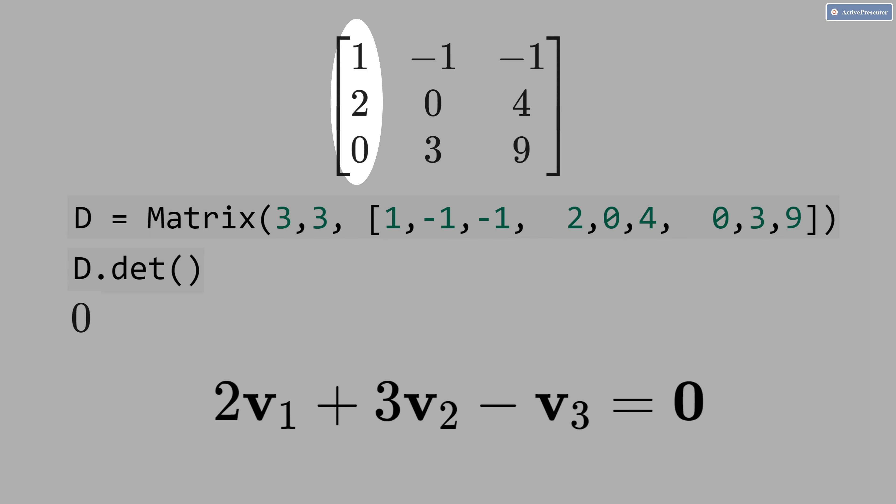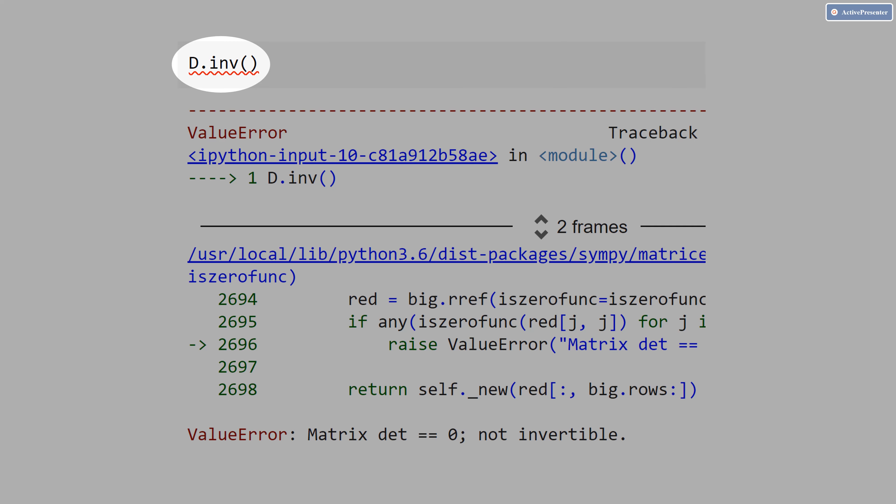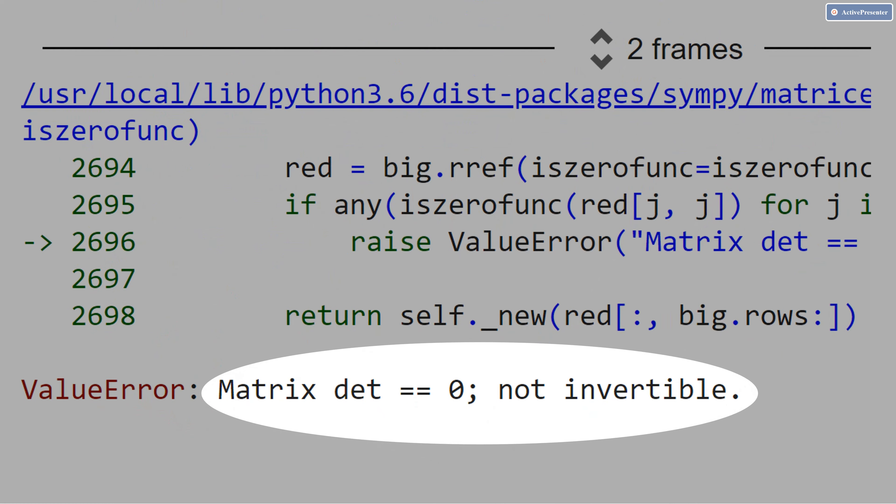You can pause the video and check. If you take v1 here and multiply by 2, and take v2 and multiply by 3 and sum up these two vectors, you get v3, that's here. And if you ask the computer to calculate the inverse of the D matrix, we get this error here. Matrix determinant equals zero, not invertible.